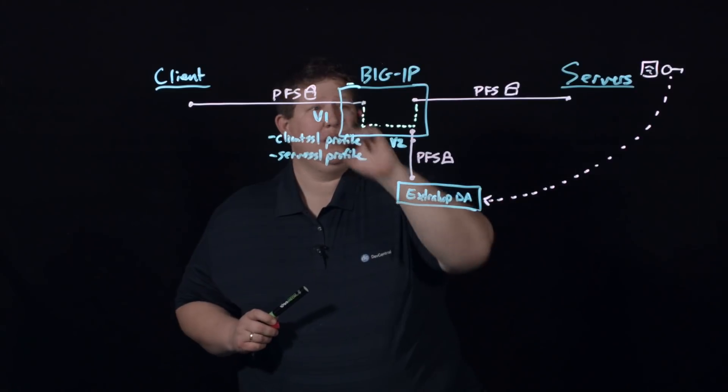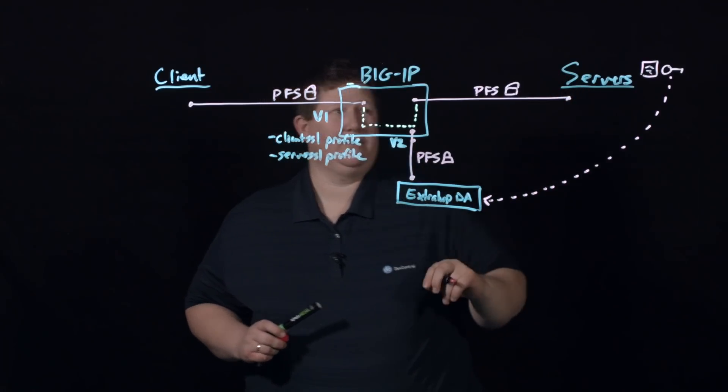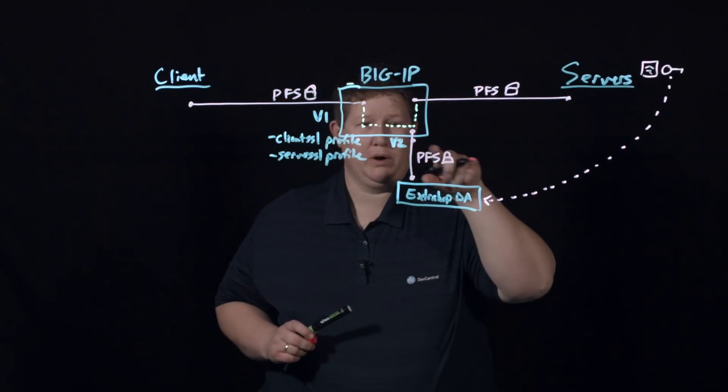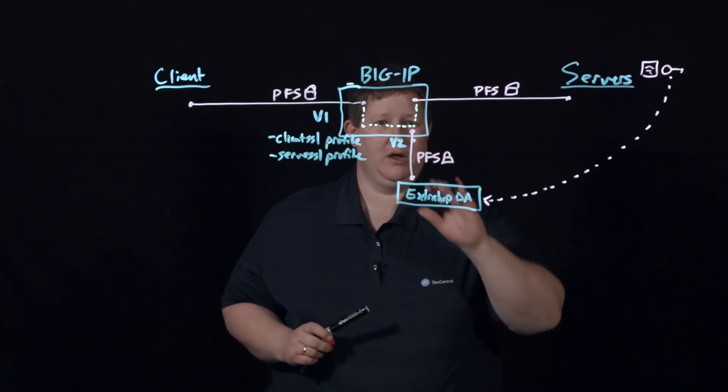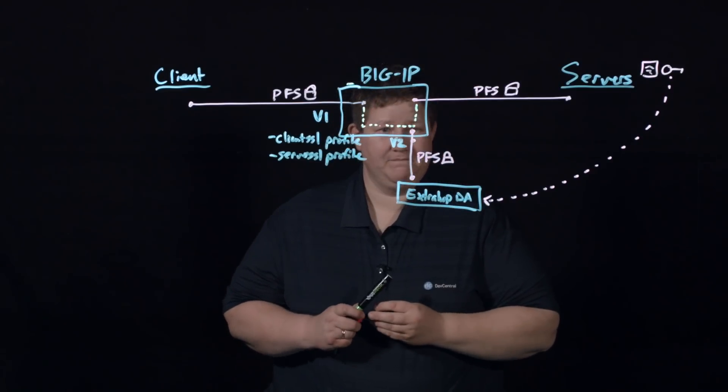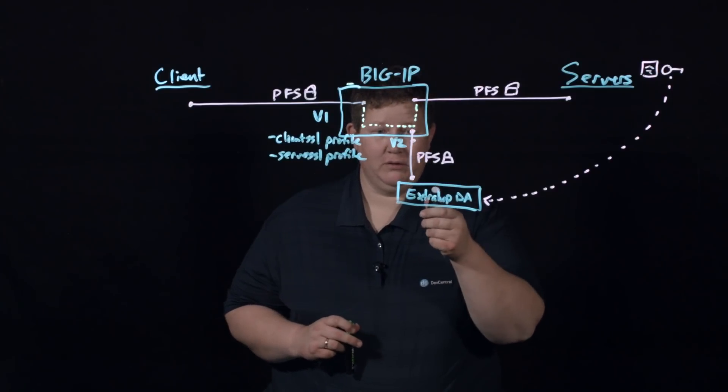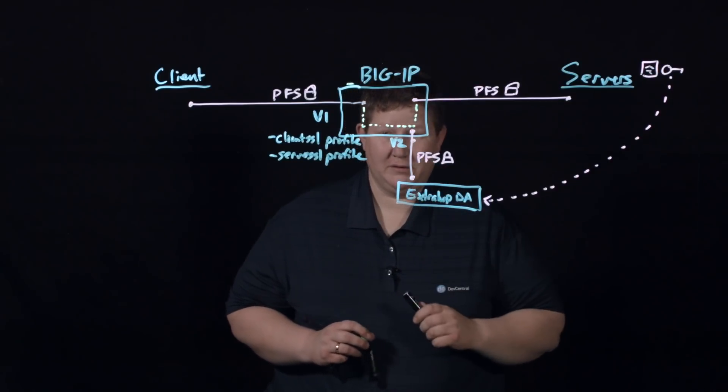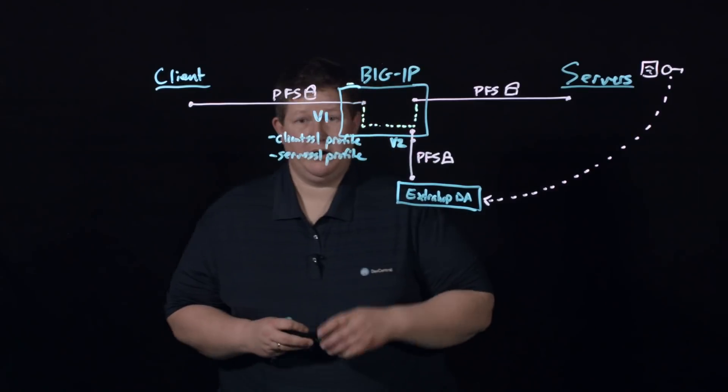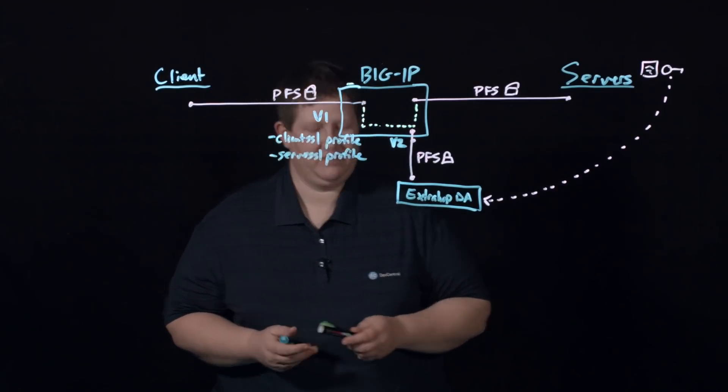Notice all the traffic, the actual data going from client to server, and then what we're going to do with the sideband connection, all of it is encrypted. So we don't have any data on the wire that's not encrypted, including to our management devices or our analysis device in this case.